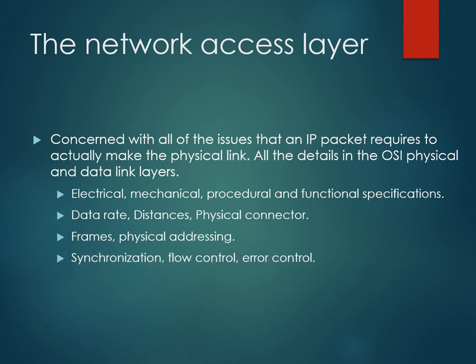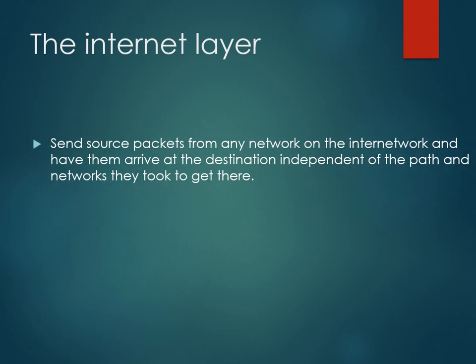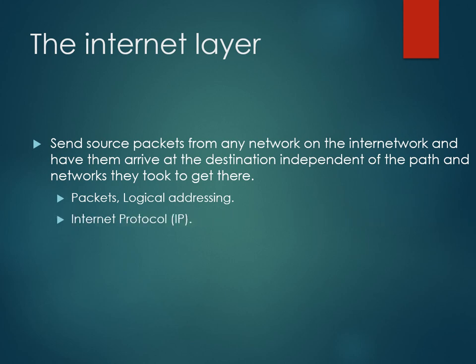Synchronization, flow control, and error control are in this layer. The network layer sends source packets from any network on the internet and ensures they arrive at the destination independent of the path and networks they travel through. We send data from source to destination in the form of packets. Logical addressing and Internet Protocol (IP) provide the routing and routing table.